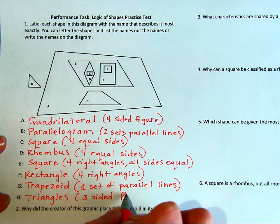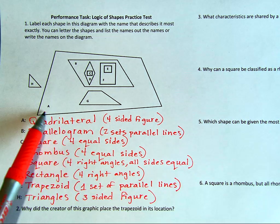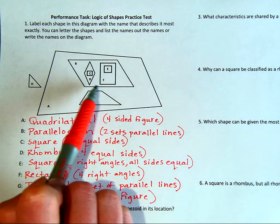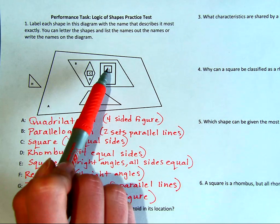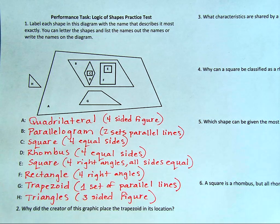Question two asks: why did the creator of this graphic place the trapezoid in its location? Well, the trapezoid is inside of figure A, which is a quadrilateral, because the trapezoid does have four sides. However, it's not inside figure B with all of the other parallelograms, because to be a parallelogram you must have two sets of parallel sides.